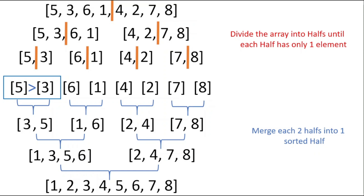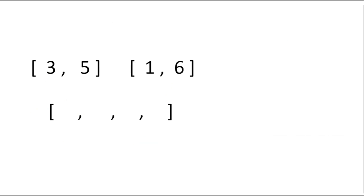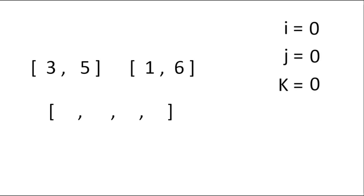We do the same for the other two halves, and then finally merge our two halves into one sorted array, which is our answer. Now let me explain in detail how the sorting works. We have a left half and a right half, and we need to sort them into a merged array. To do this we need three variables: i, j, and k.